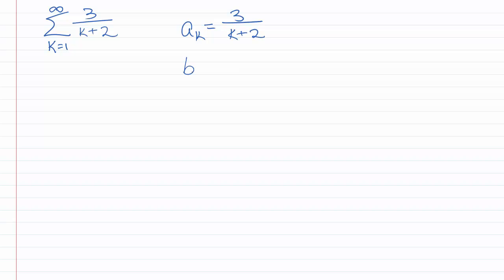We need to come up with a b sub k that we can compare it with. Looking at this a sub k, it makes me think of 3 over k. And 3 over k acts like the harmonic series — it's just a constant times the harmonic series. So the series 3 over k diverges.